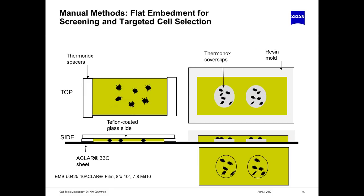For those who haven't done flat embedment before, it's a simple technique whether working with tissue, cell cultures, or coverslips. You can use Aclar sheets with a small amount of your preferred resin, Thermonox spacers because they are solvent resistant and can be cut to size, and a Teflon-coated glass slide. I would spray a glass slide with Teflon, let it dry, and use that as the coating. The Teflon coating allows the small piece of resin to release from the glass quickly after cutting, while still holding it well enough for light microscopy imaging.